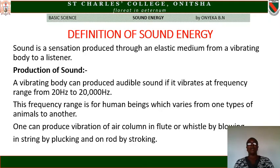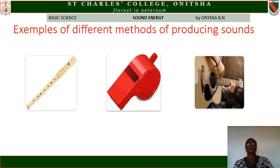One can produce vibration of an air column in a flute or whistle by blowing, and in a string by plucking, and on a board by striking. Examples of different methods of producing sound include the flute, which is a local object or vessel, and the guitar — you will see them in the diagram.